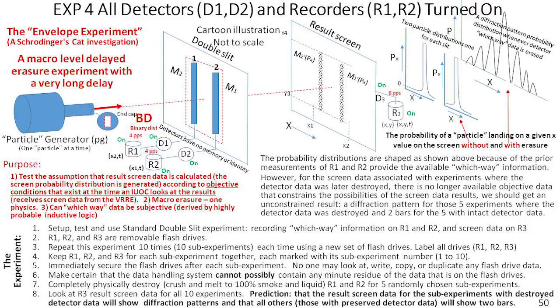After collecting the 20 sets, we'll randomly select 10 of them and destroy the R1 and R2 data by burning those flash drives until there's nothing but liquid and ash, with no possibility of retrieving any data. That's our eraser, eliminating the which-way data for 10 of the 20 experiments.